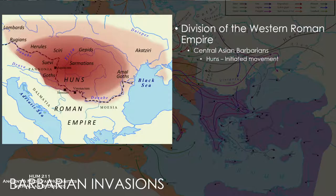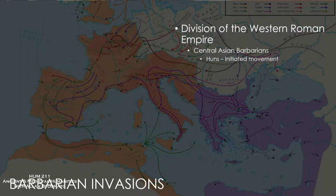It was a fairly large kingdom that stretched from the Caspian Sea all the way into Gaul at its peak. The Huns were invading Roman territory both in the eastern and western portions of the empire. In front of them, pushed by them, were numerous Germanic tribes.